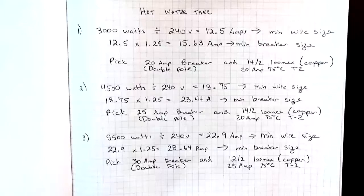Then because our breaker has to be 125 percent larger than the ampacity of our load, we take 12.5 multiplied by 1.25. This gives us 15.63 amps and that gives us our minimum breaker size.